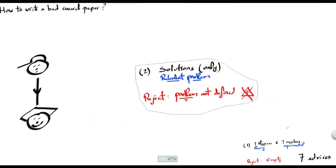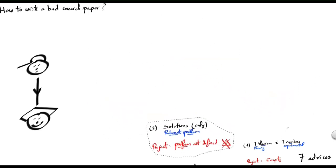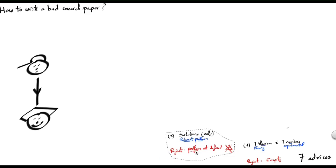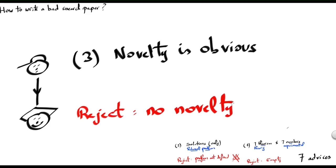Now assume you have a theorem or numbers, and you define the problem addressed by your theorem or system. It is still easy to make the reviewer happy by assuming that novelty is obvious. In this case, the reviewer rejects the paper by saying there is no novelty. This doesn't mean the solution has no novelty; it means the author did not highlight the novelty.